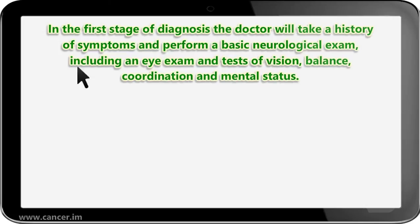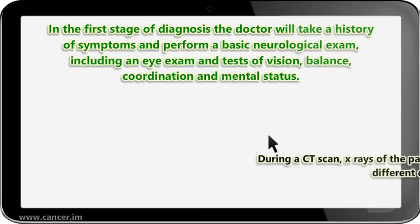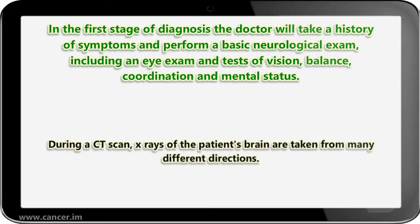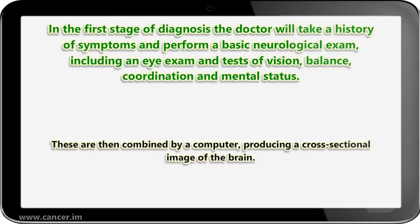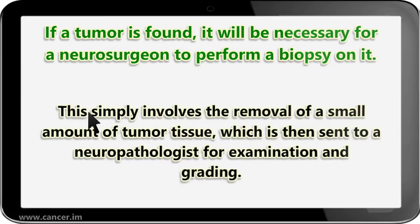Histologic analysis is necessary for grading and diagnosis. In the first stage of diagnosis, the doctor will take a history of symptoms and perform a basic neurological exam, including an eye exam and tests of vision, balance, coordination, and mental status. The doctor will then require a computerized tomography scan and magnetic resonance imaging of the patient's brain. During a CT scan, X-rays of the patient's brain are taken from many different directions and combined by a computer, producing a cross-sectional image of the brain. If a tumor is found, it will be necessary for a neurosurgeon to perform a biopsy on it, which involves the removal of a small amount of tumor tissue, sent to a neuropathologist for examination and grading.